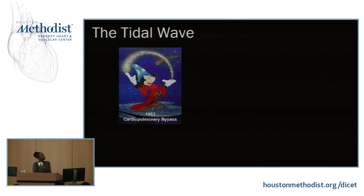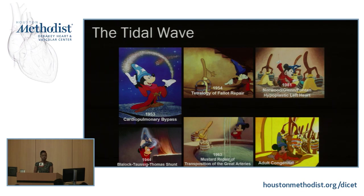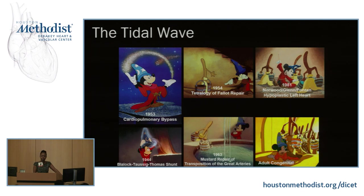Let's talk about the prevalence and future of congenital heart disease. In 1953, the first cardiopulmonary bypass was used in repair of an atrial septal defect. Prior to that, in 1944, the BT shunt was invented. In 1954 came the Tetralogy of Fallot repair; in 1963, the Mustard repair for transposition of great arteries; followed by the Norwood, Glenn, and Fontan for hypoplastic left heart in 1981. The first hypoplastic left heart patient is approximately 37 years old today — that brings us to adult congenital heart disease.